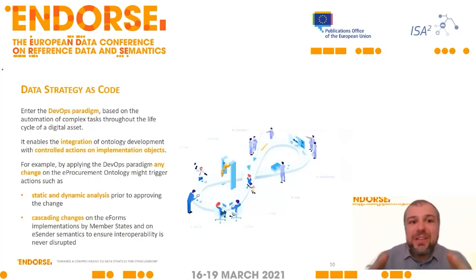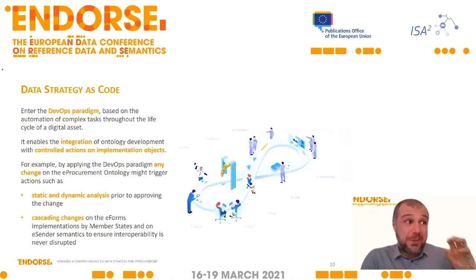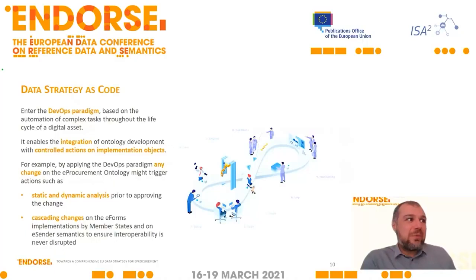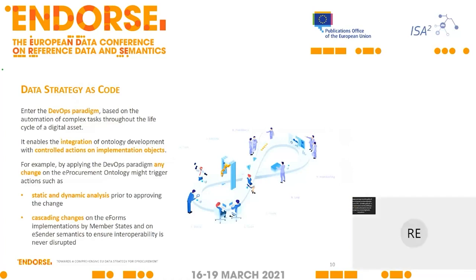Second idea: thinking of the data strategy as code — using DevOps, for example. In the change management of the ontology, one of the main problems is that when you change the ontology, you risk disrupting the interoperability between systems, because not all systems are able to adapt to the ontology change. Using DevOps means using automatic rules for cascading changes from the ontology to implementations to overcome this problem. DevOps involves running automatic checks when a change is made, without human intervention.